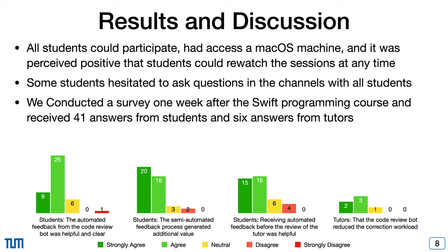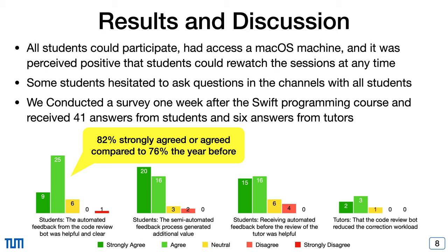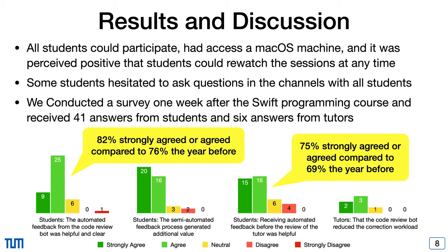The overall feedback was positive, confirmed by a survey conducted one week after the Swift Bootcamp. We received 41 answers from students and 6 from tutors. 82% of students agreed or strongly agreed that the automated feedback from the code review bot was helpful and clear, and 75% agreed that receiving automated feedback before the tutor review was helpful. This was an improvement compared to the previous semester, where 76% agreed the bot feedback was helpful and clear, and 69% agreed the semi-automated feedback process generated additional value compared to a manual review process. The semi-automated code review system was also received overwhelmingly positively by tutors.